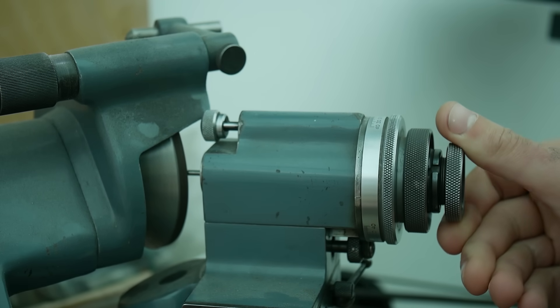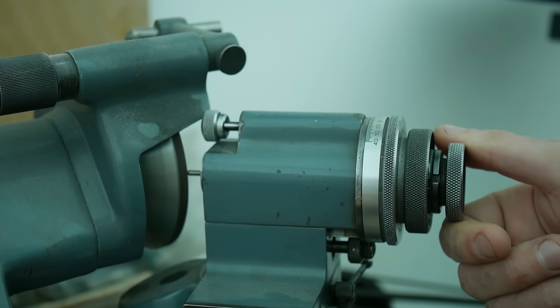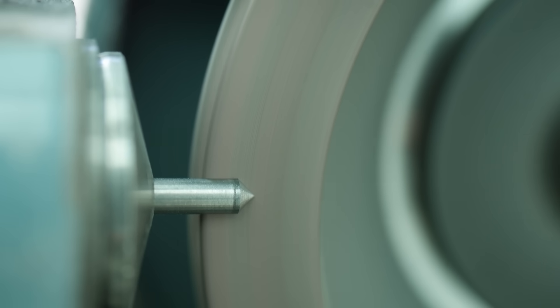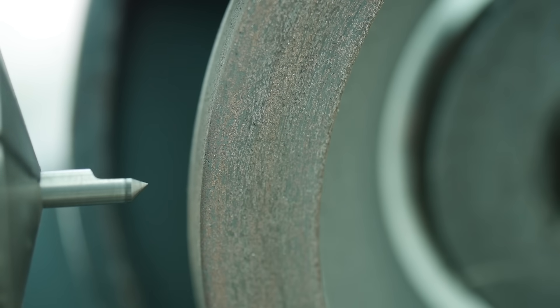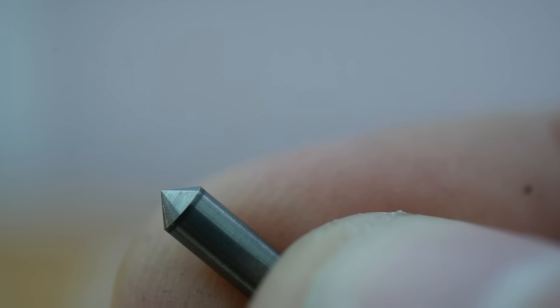The bridge here requires countersunk holes to be formed, and I wasn't entirely satisfied by the previous approach you saw earlier in the video for the bottom plate, so I ground a D-bit from carbide instead, which worked much better. I'm very happy with the result.